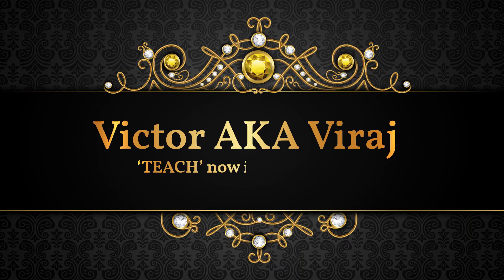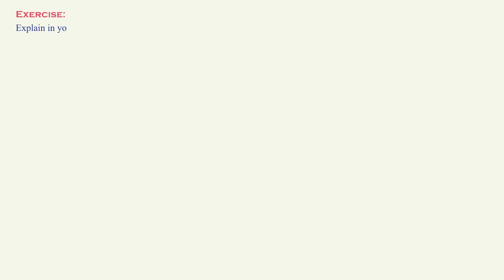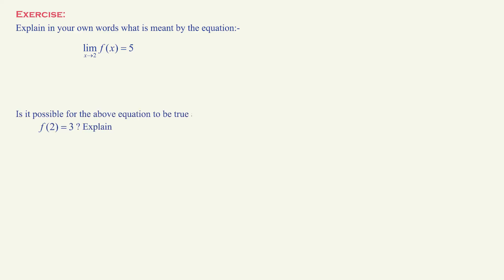I'm going to start this video with a couple of conceptual problems that should be relatively simple to answer, at least if you watched the last video. Explain in your own words what is meant by the equation: limit as x approaches 2 of f of x is 5, and is it possible for the above equation to be true and yet f of 2 to be 3? Explain.